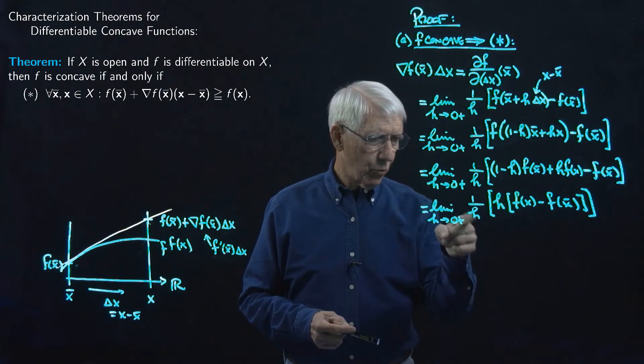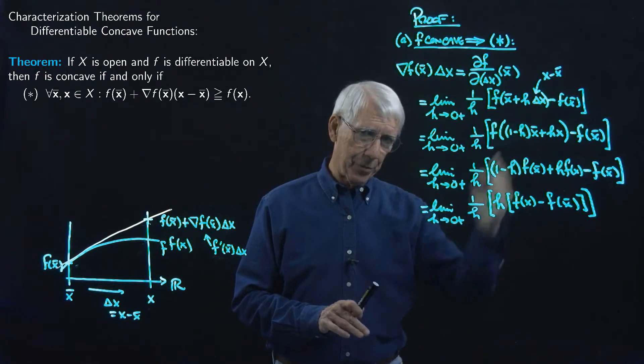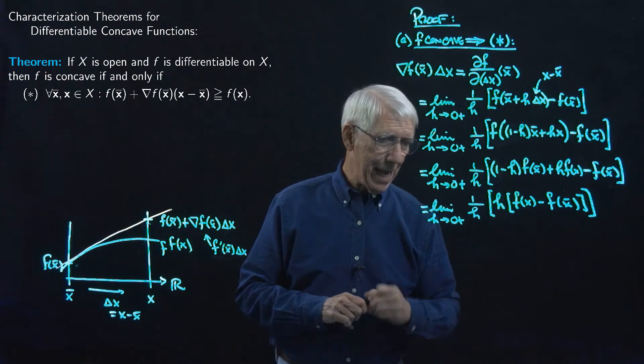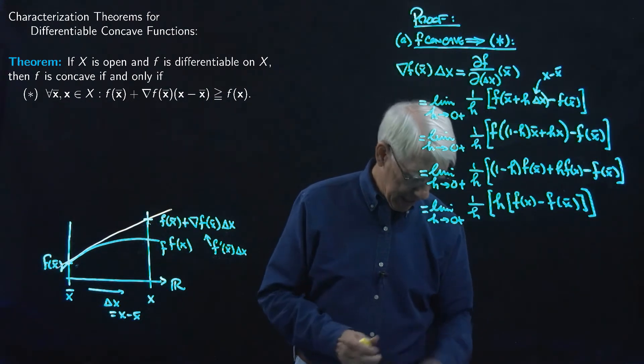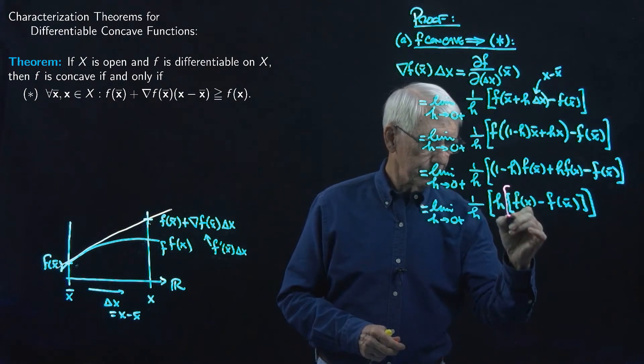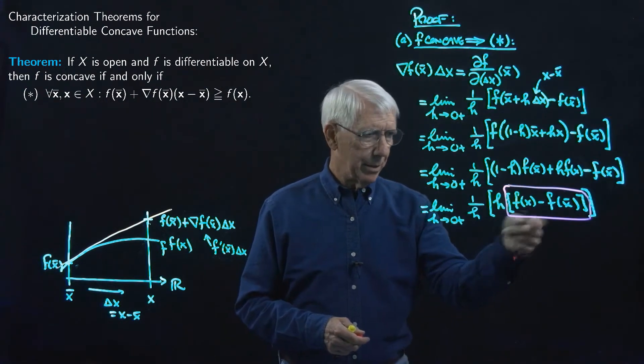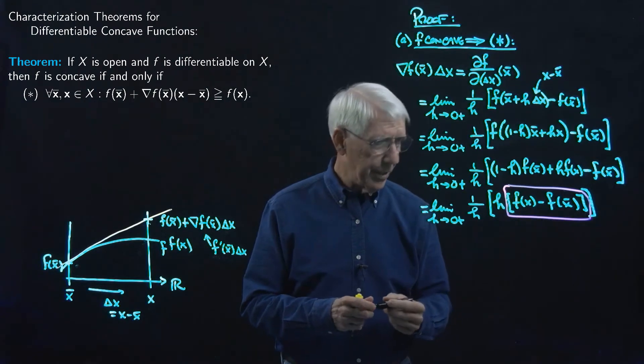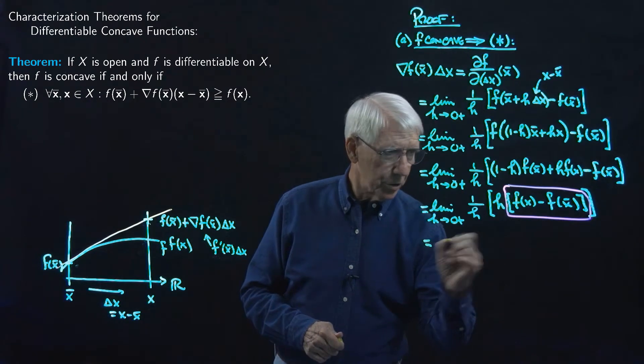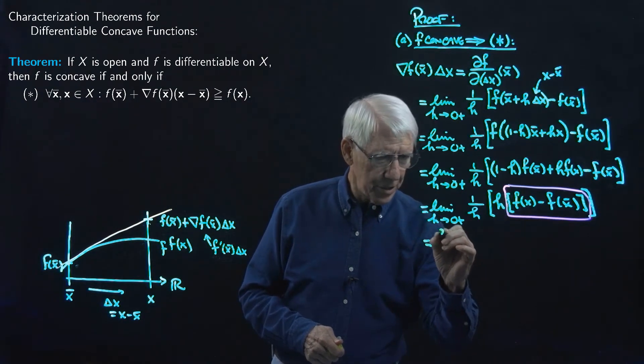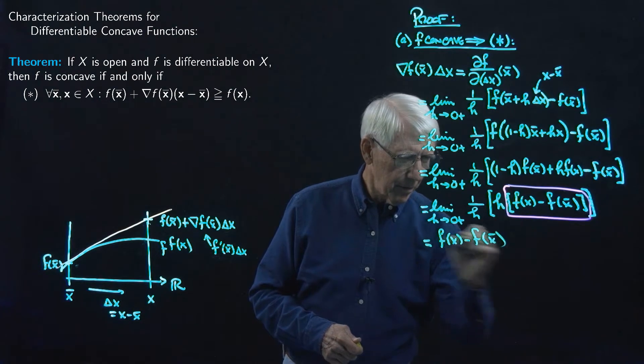Now of course, one over H times H, that's just one, so those H's, we can throw those out. And what we have now is the limit as H goes to zero of just this, and that's a number, there isn't any H in here, so that's just a number. So that means that we have, this is equal to that number, this is equal to F of X minus F of X-bar.